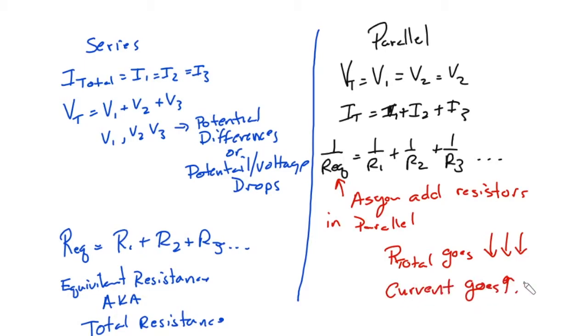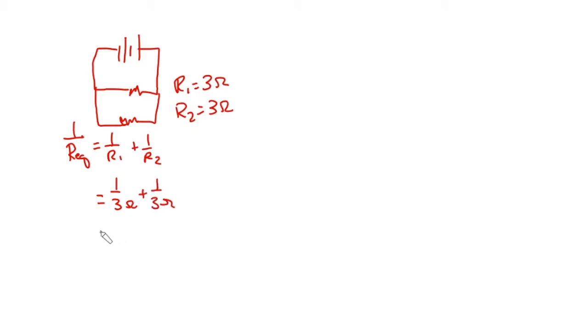And let me, I'll show you an example of what I mean by that. Let's say for example I had a parallel circuit and it has a battery, it came out and here's R1 and here's R2. And R1 equals 3 ohms and R2 equals 3 ohms. So if I wanted to find REQ, I would say 1 over REQ equals 1 over R1 plus 1 over R2, equals 1 over 3 ohms, which equals 2 over 3 ohms.